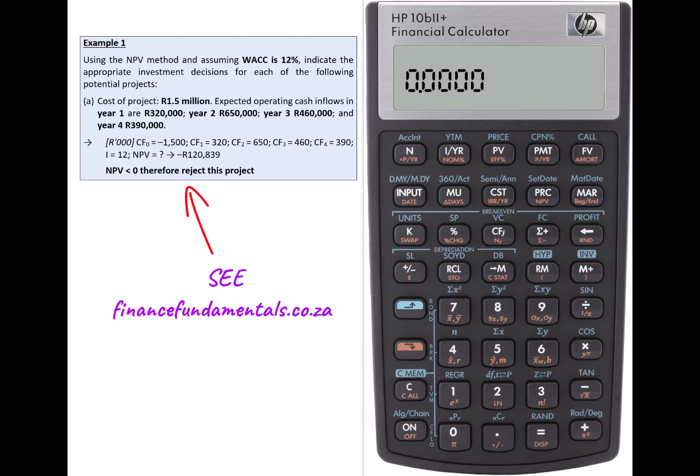See the link in the description for where to find this example and much else besides on the Finance Fundamentals website. We begin as usual by clearing all registers and noticing in passing that we see the correct setting of one per year.